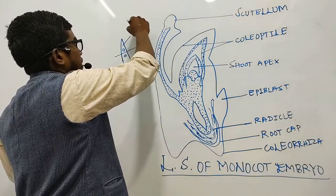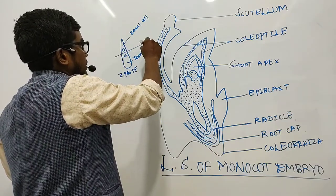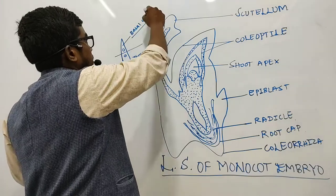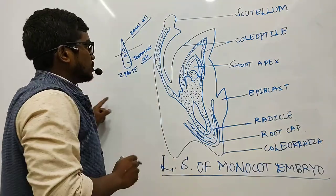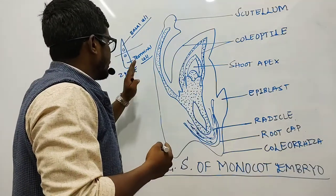The basal cell is towards the micropylar end and the terminal cell towards the chalazal end, same as in the case of dicot embryo, how we found the same here also we can find, my dear friends.